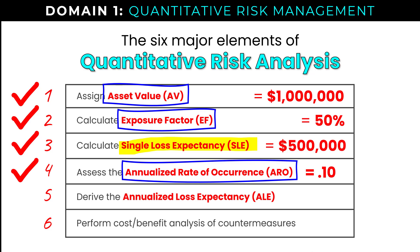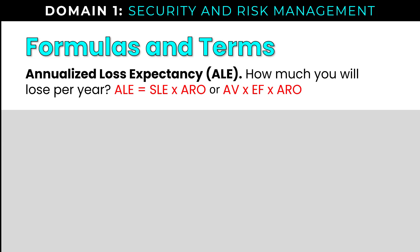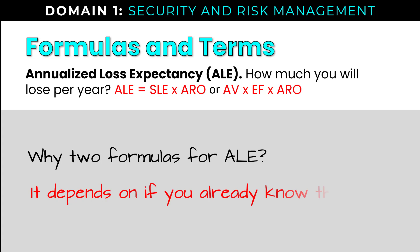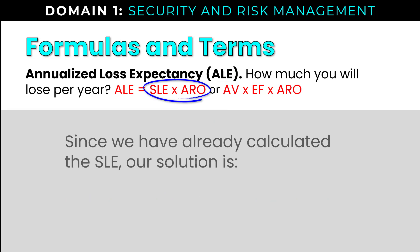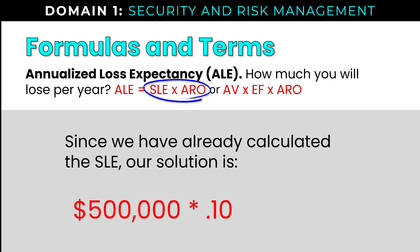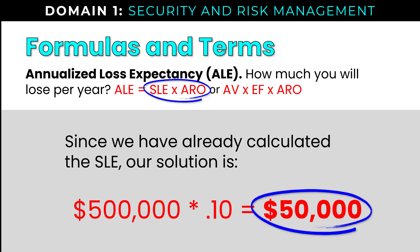Step five: calculate our annualized loss expectancy, or ALE. You may see one of two formulas for ALE — it depends on whether you already know the single loss expectancy, since SLE is essentially asset value times exposure factor. We'll go the route of SLE times ARO, since we've already calculated the SLE. So: single loss expectancy $500,000 times an annualized rate of occurrence of 0.1 gives us an ALE of $50,000.